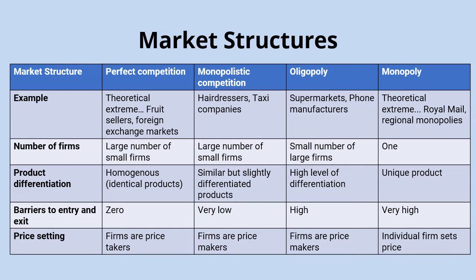Markets are going to be very different and they depend on these different characteristics. The number of firms is quite straightforward — how many firms are operating in that market. The level of product differentiation refers to how different the product offerings are from different firms and companies. Barriers to entry and exit refer to how easy it is to move into or out of that particular market — cost is a big factor, but there are also legal barriers and levels of brand loyalty. Finally, price-setting power refers to whether firms accept the going market price or have the power to set their own prices.